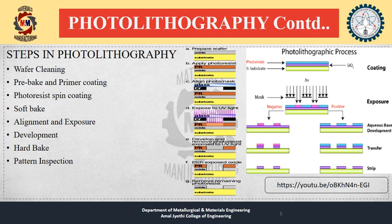A post-exposure bake (PEB) is performed before developing, typically to help reduce standing wave phenomena caused by destructive and constructive interference patterns of the incident light. In deep ultraviolet lithography, chemically amplified resist chemistry is used. This process is much more sensitive to PEB temperature and delay as most of the exposure reaction actually occurs during the PEB. The photolithography stepper or scanner and the optical developer are usually installed side by side.